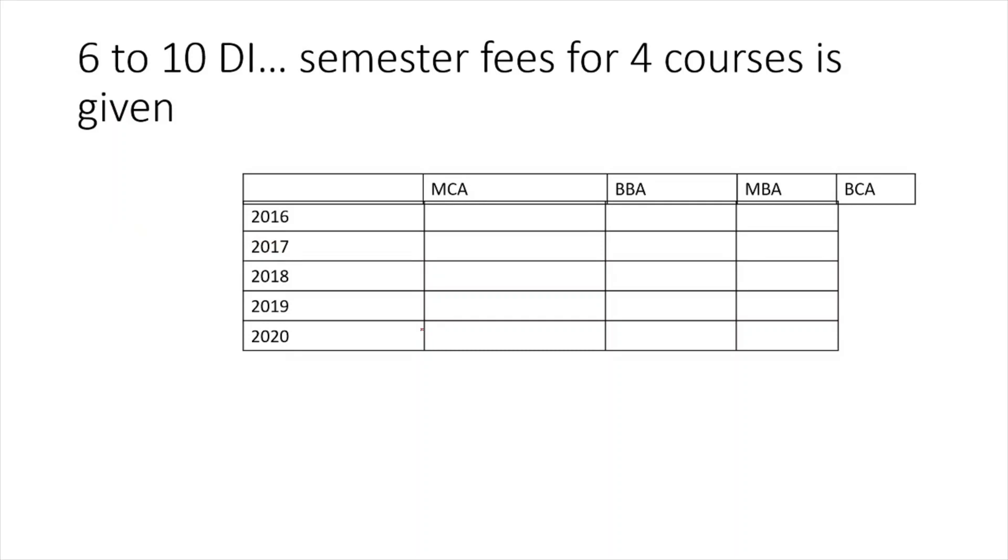Questions 6 to 10: the data interpretation question was quite simple this time, but you have to add larger numbers. The semester fees are given for different courses like MCA, BBA, MBA, and BCA for the years 2016 to 2020. Five questions are there: you have to calculate the average increase in year 18 and 19 for MCA, the difference between BBA and MBA, and so on. Different questions based upon average, percentage increase, and the difference between percentage increases.